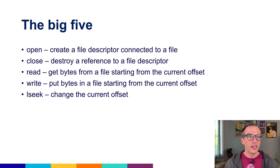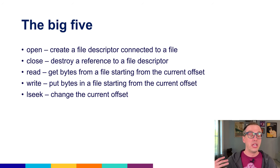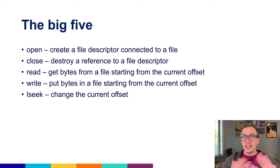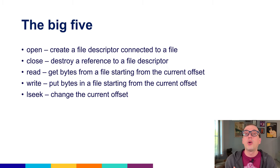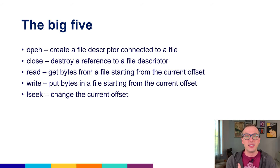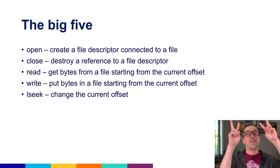The big five different APIs that we're going to use to interact with files are the ones on the screen: open, close, read, write, and seek. Everything else that we use is going to be more or less built on top of these, even when we aren't interacting with a file that is on the hard drive. These are going to be the ways that our user-level process communicates with the operating system and tells it what it wants to do with files.